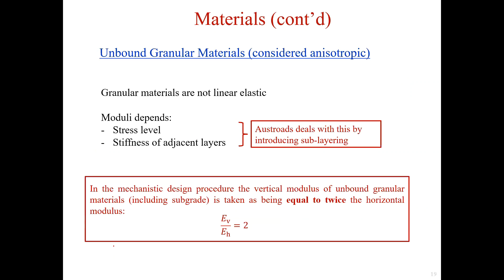The granular materials are not linearly elastic, and the modulus depends on the stress level and stiffness of nearby layers. In such a case, sublayering is recommended. In the mechanistic design procedure, the vertical modulus of unbound granular materials, including the subgrade, is normally taken as twice the horizontal modulus — so the ratio of E_V to E_H is 2.